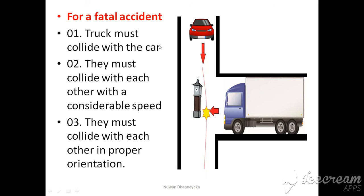To summarize the analogy: first, the truck must collide with the car. Second, they must collide with a considerable minimum speed — around 80 to 100 miles per hour. Third, they must collide in the proper orientation, meaning the impact must be at the position closest to where the driver is seated.